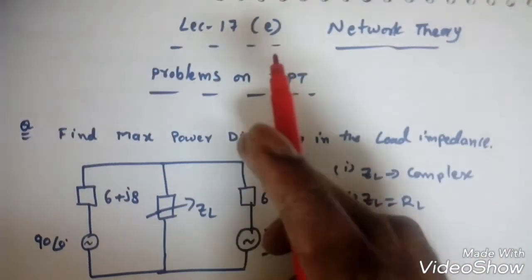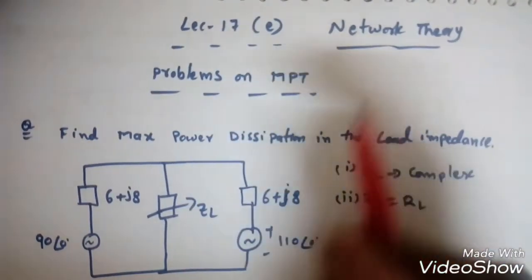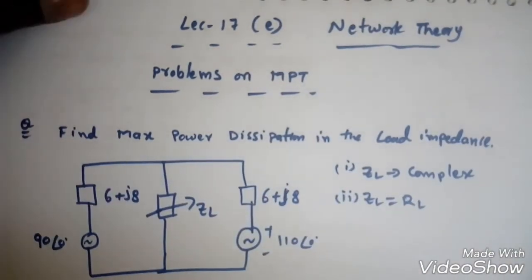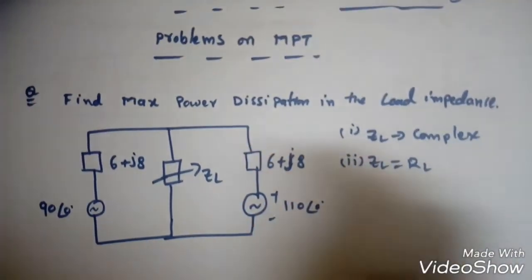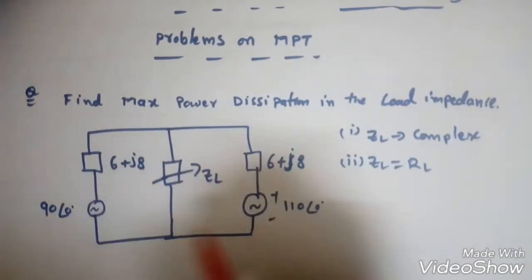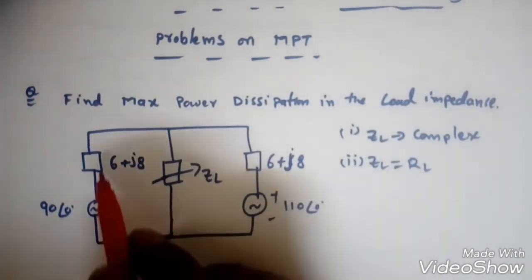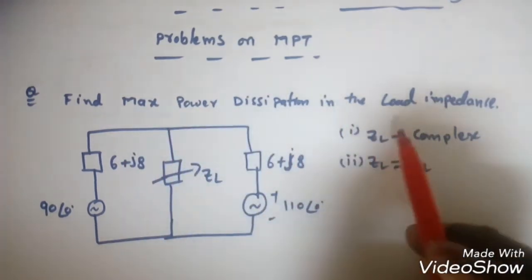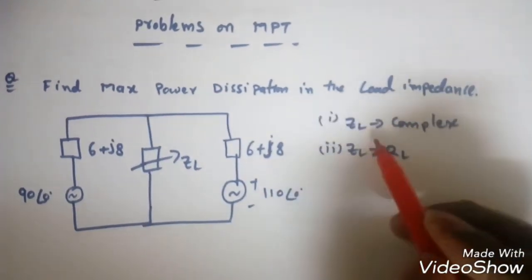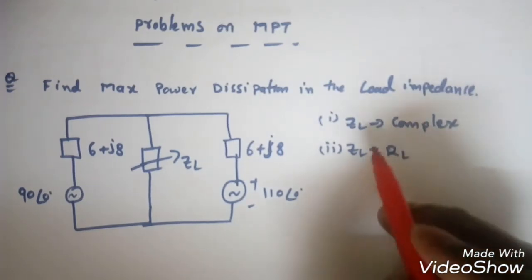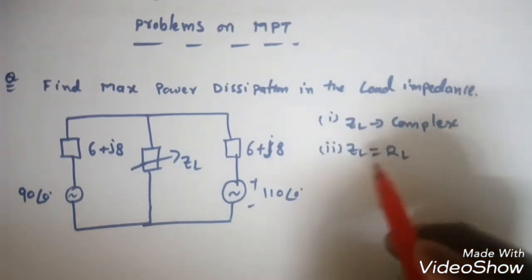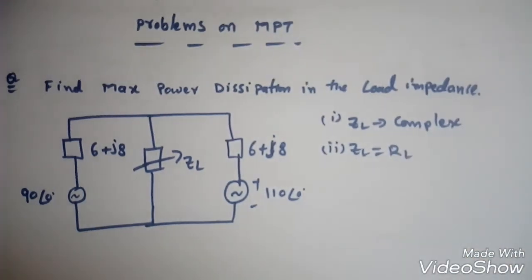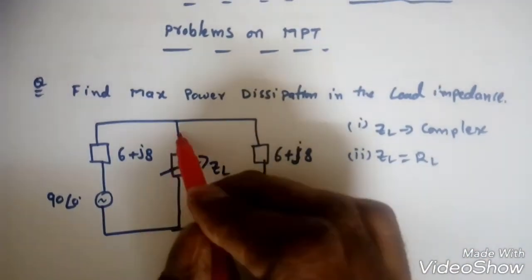This is Lecture 17, part of Network Theory. In this lecture we are going to solve some problems on the Maximum Power Transfer Theorem. This is a question for AC power with AC sources and complex impedances — find maximum power dissipation in the load impedance. ZL can be complex: the first case is ZL is complex in nature, and the second case is ZL is purely resistive.